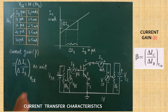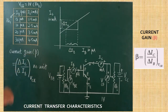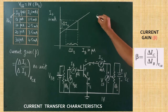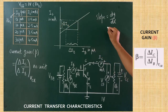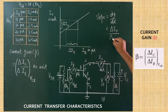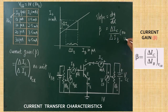After getting del IC and del IB, substitute both values into the formula to get the current gain. The slope formula is dy by dx. Here dy is del IC and dx is del IB. The slope value directly gives you the current gain value beta. Substitute the values and you will get a certain value of beta. That value of beta does not have any unit. The unit for current gain is nil.